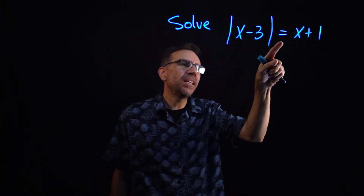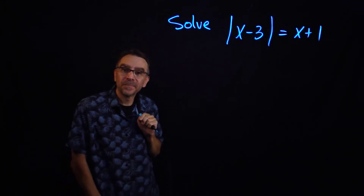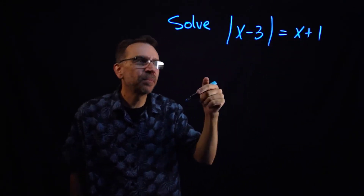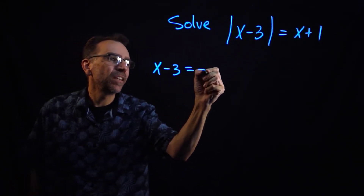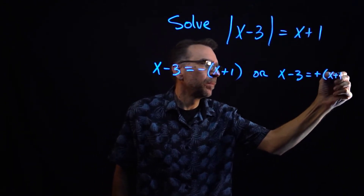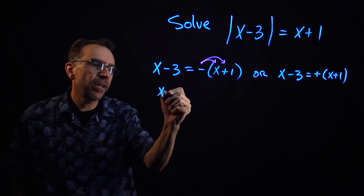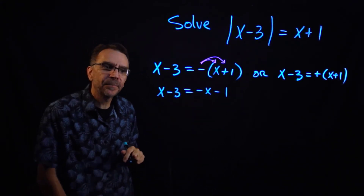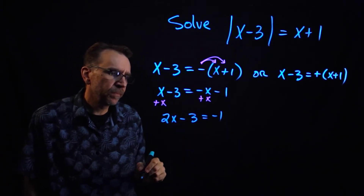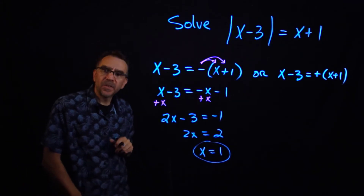Now let's look at the next one: absolute value of x minus 3 equals x plus 1. The absolute value is isolated, but it's equal to a quantity, not just a number. We use the same approach — set the inside equal to plus or minus that quantity. So x minus 3 equals negative x minus 1. Distributing the negative and adding x gives 2x minus 3 equals negative 1, then 2x equals 2, so x equals 1.